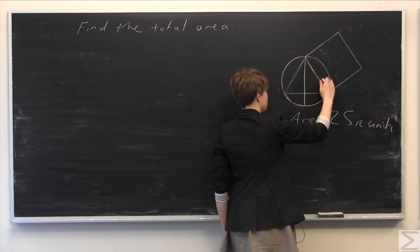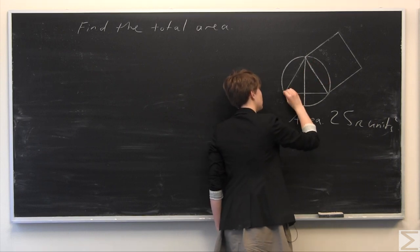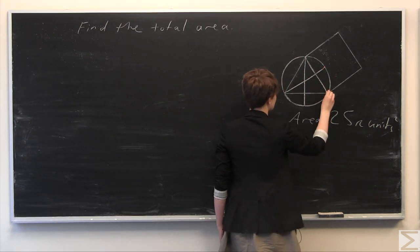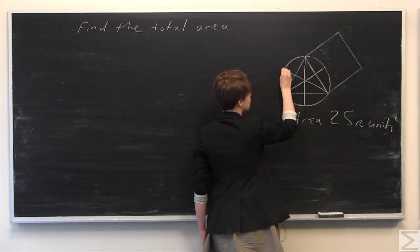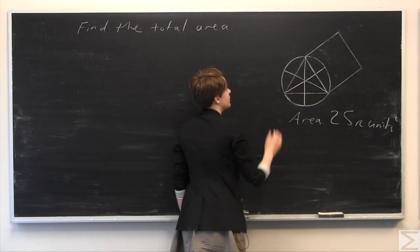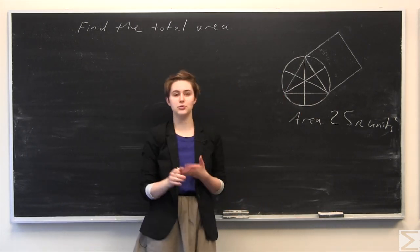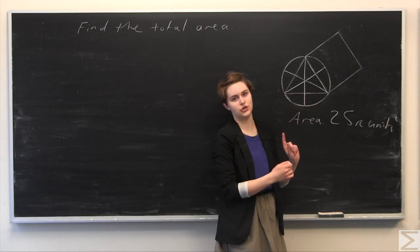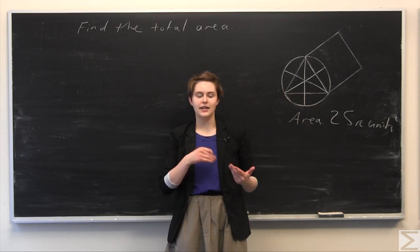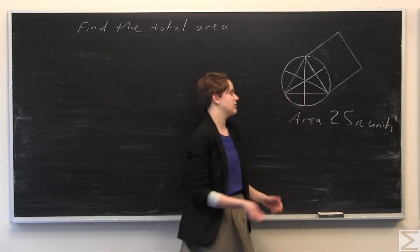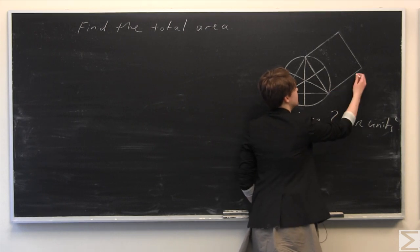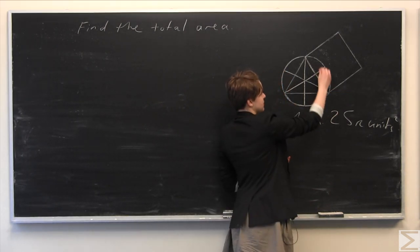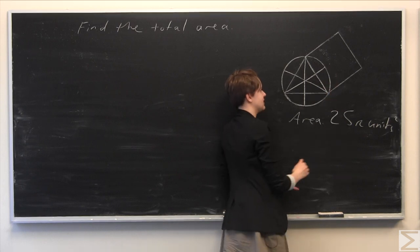from each vertex of the triangle over to the other side, just like so. Now we can exploit the fact that we know the radius of the circle in order to find the length of each of these sides of the triangle. We need to find each side of the triangle so that we can find the area of the square, because we already know the area of the circle, and later we'll need that to find the area of each little sector.